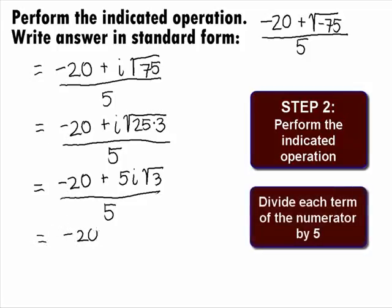Dividing each term of the numerator by 5, we get negative 20 over 5 plus 5 square root of 3 over 5i.